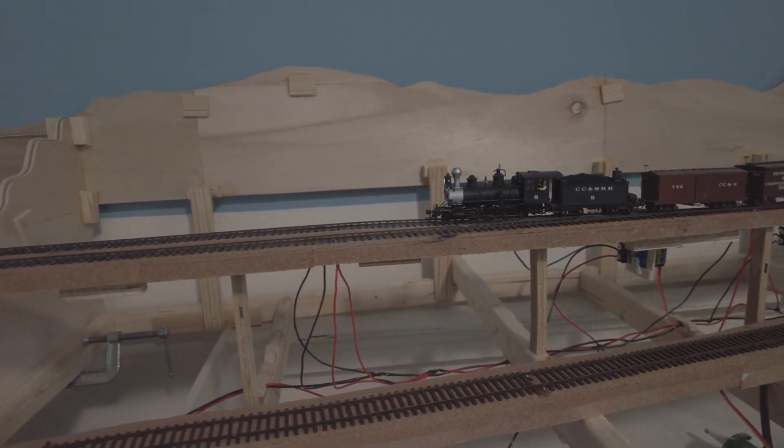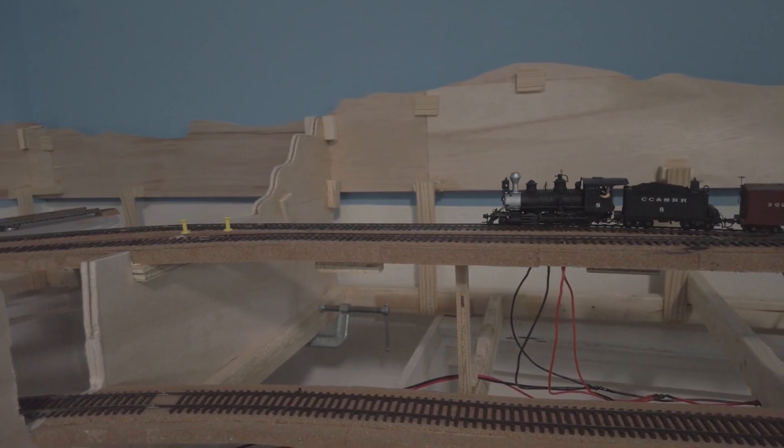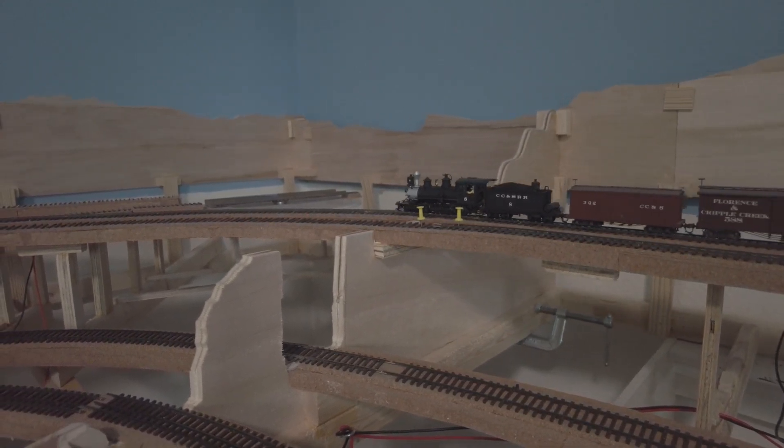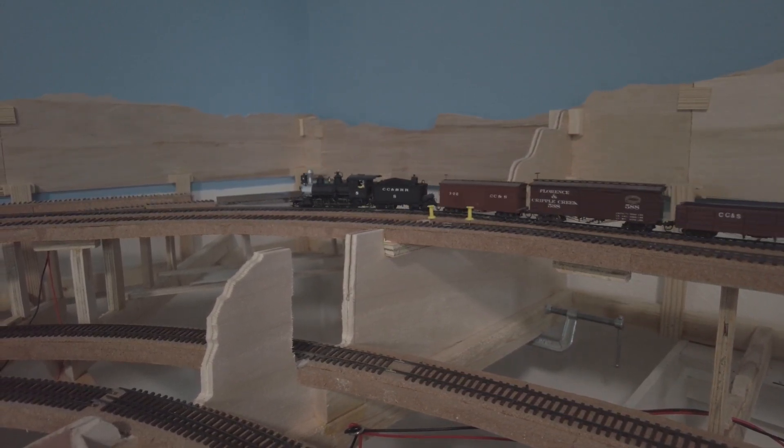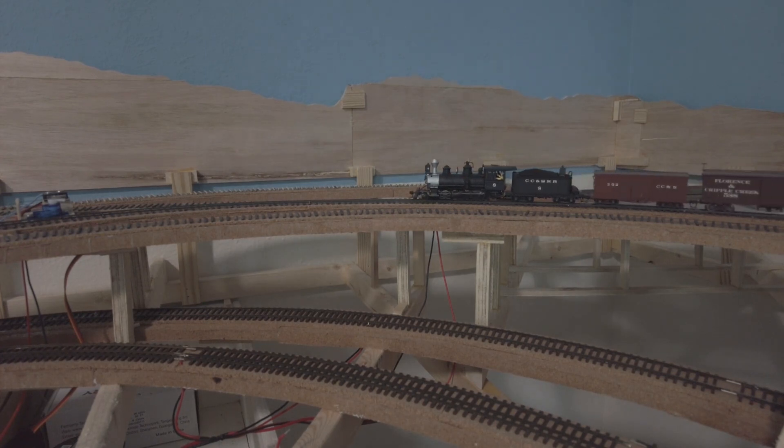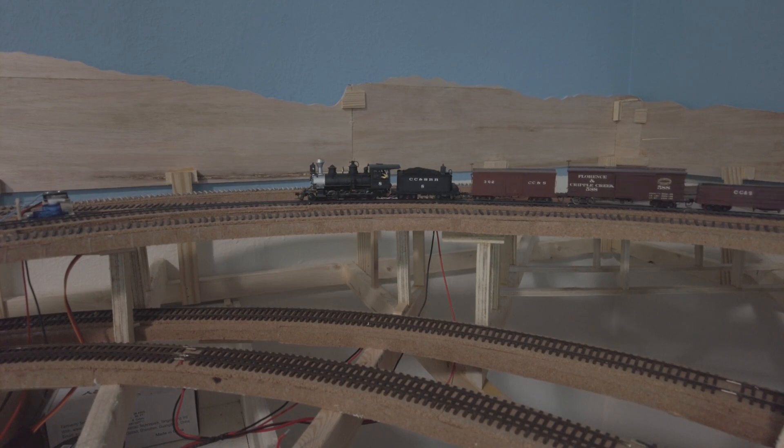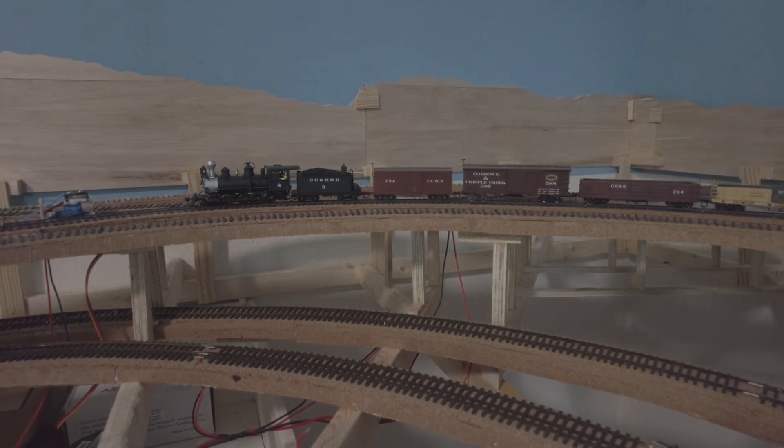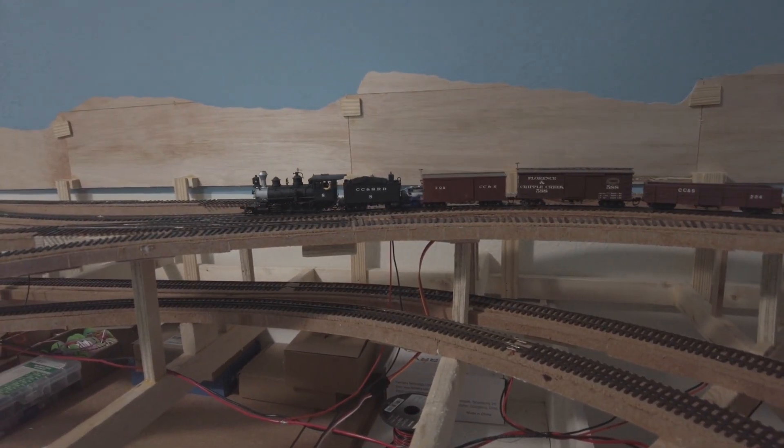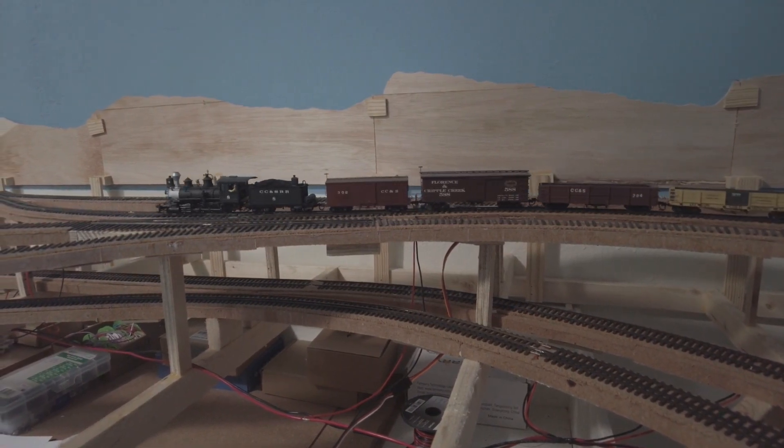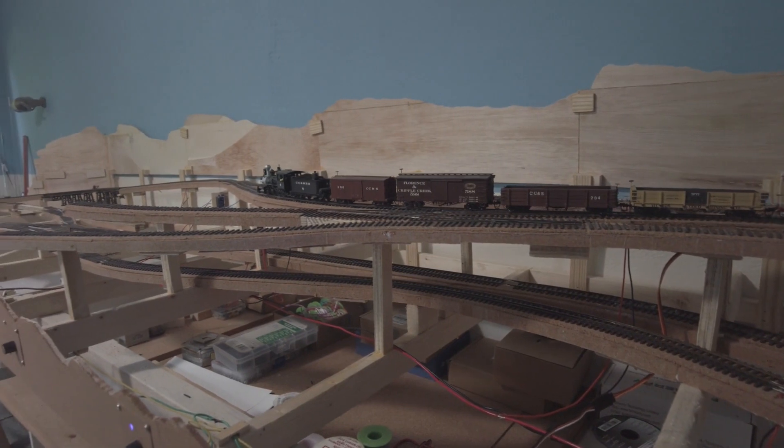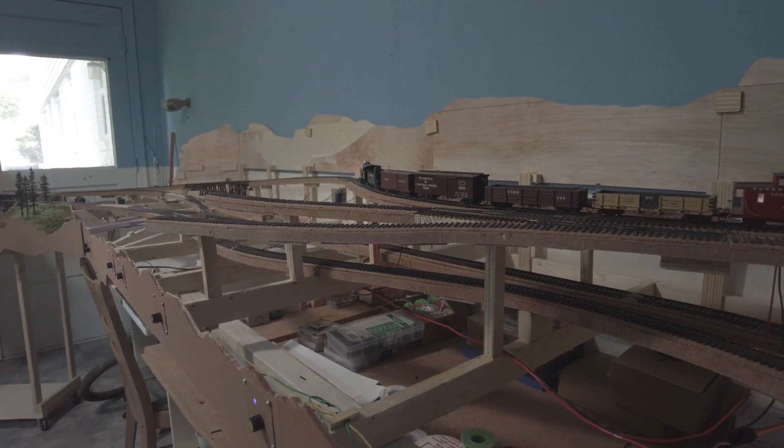We're entering the town of Wolfe now. This will be the upper terminus of the railroad. We're continuing through the town of Wolfe. And the Wolfe Mining Company will be here in the foreground.